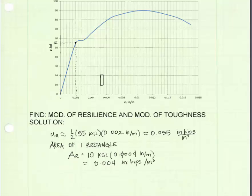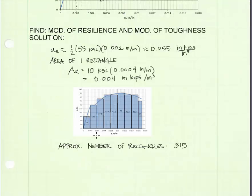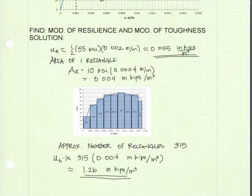That's one rectangle. Now I'm going to proceed to count all of the rectangles under the curve. I've divided up the area under the stress-strain curve into rectangles and counted the number of smaller rectangles in each of the larger rectangles. I get an approximate number of rectangles under the curve to be about 315. I can now calculate my modulus of toughness to be approximately equal to 315 of those rectangles times the area of a single rectangle, 0.004 inch kips per cubic inch, and I get a value of 1.26 inch kips per cubic inch.